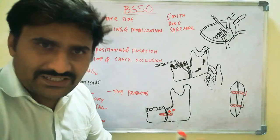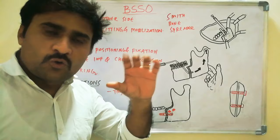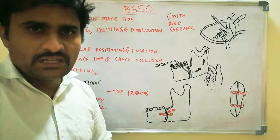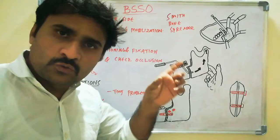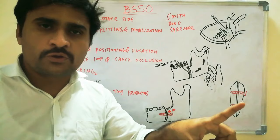After fixation, release the IMF and check the occlusion — including closing, opening, and lateral translation movements. If occlusion is accurate, close the incision. If there is malocclusion, remove the plates and re-attempt fixation. Suturing must be in two layers: muscles first, then oral mucosa.